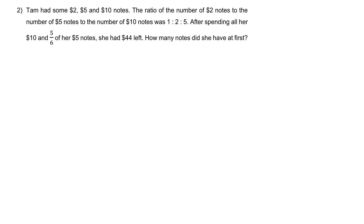Usually, as I mentioned before, if the question asks you to find something 'at first,' the way to do it is to work backwards — in this case, to draw your ratio table backwards. However, I also mentioned that in some cases, working backwards is less efficient. So this is one of the rare few cases where, even though the question asks you to find something at first, it's actually easier to work forward.